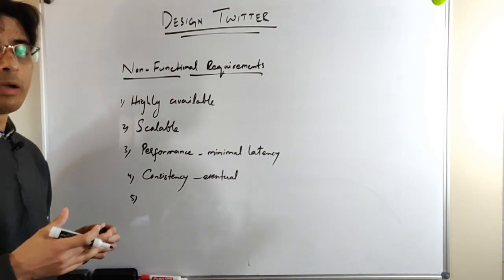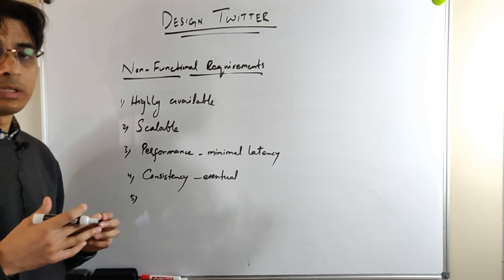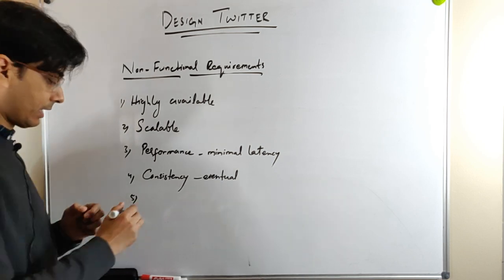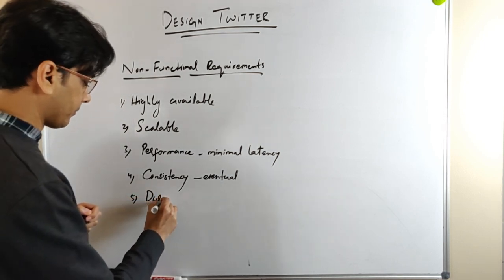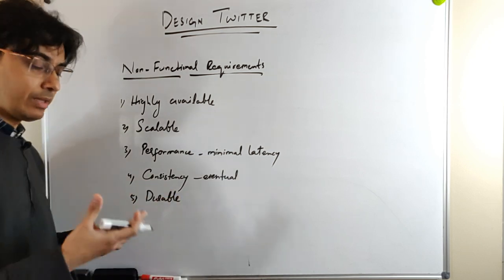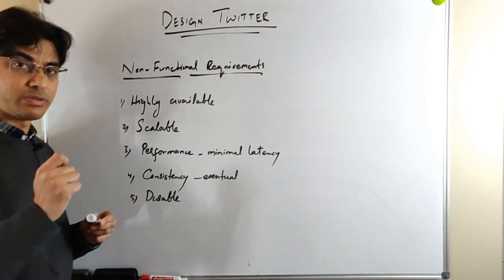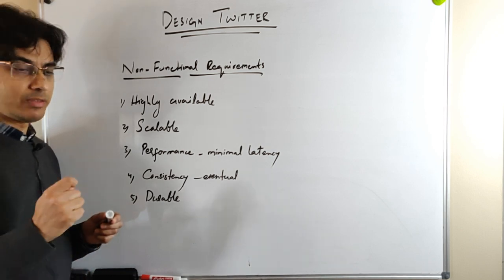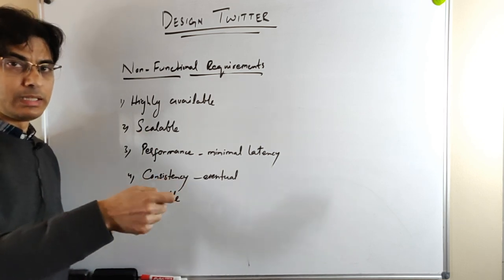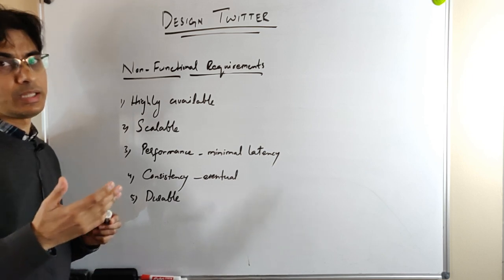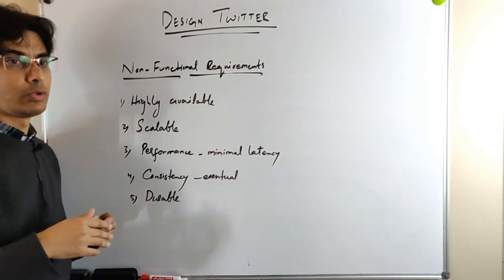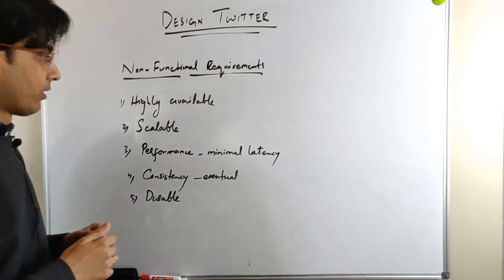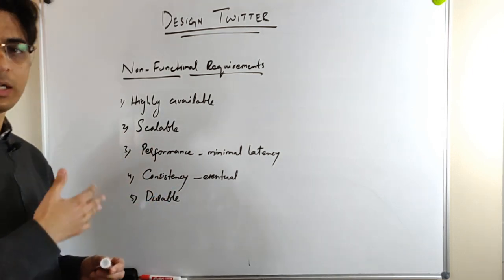The fifth non-functional requirement is we would like our service to have durability of data. Once a user has posted a tweet, the tweet should not be deleted from the system. If a user is following another user and signs off then signs in again, he should still see that he is following the user — we don't want data to be lost.